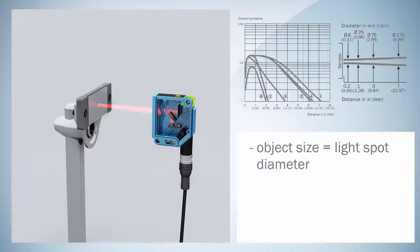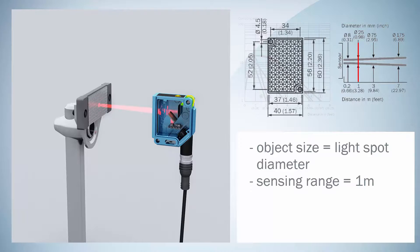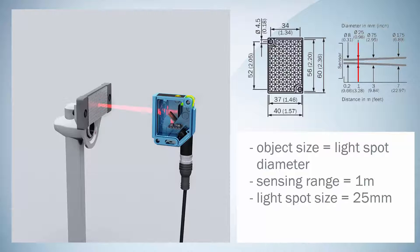In our demonstration we'd like to cover a sensing range of 1 meter and use a PL48 reflector. This reflector is used due to the fact that the datasheet shows that the light spot diameter at 1 meter is 25mm and the reflector should be of a similar size. The PL48 dimensions of 56mm by 40mm fit perfectly.